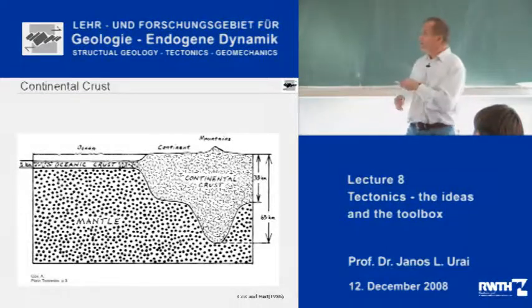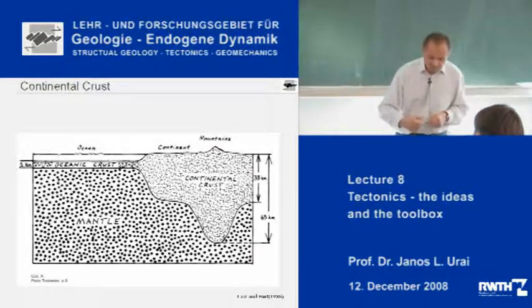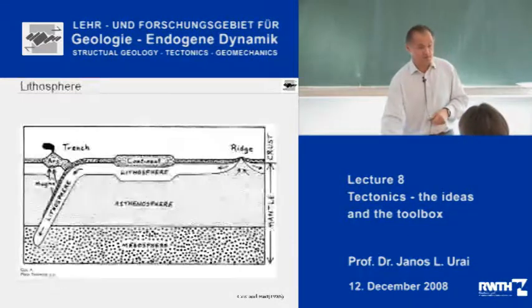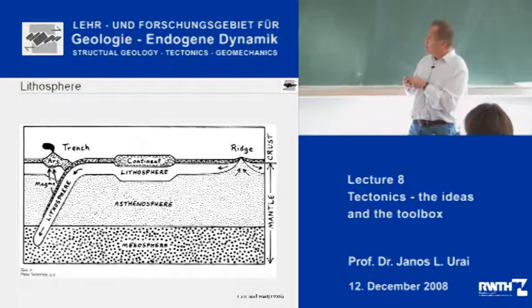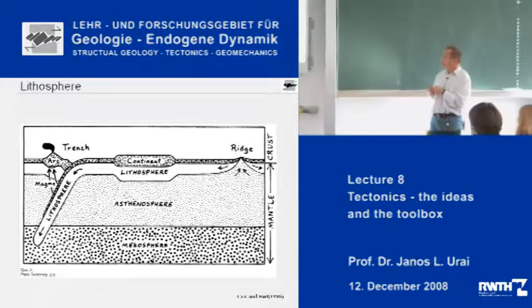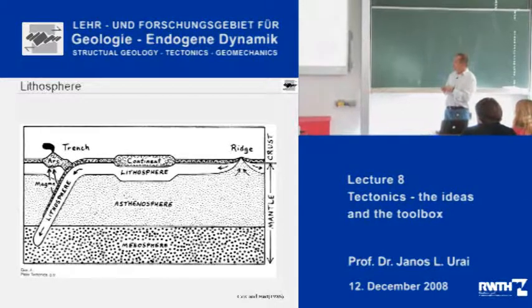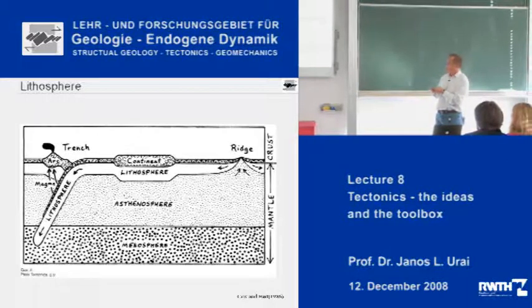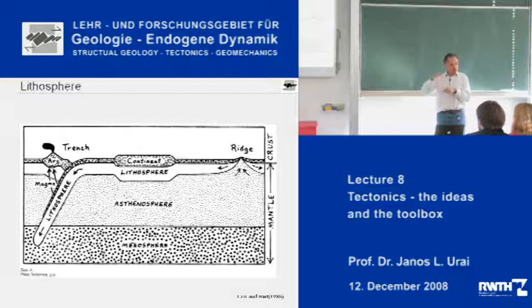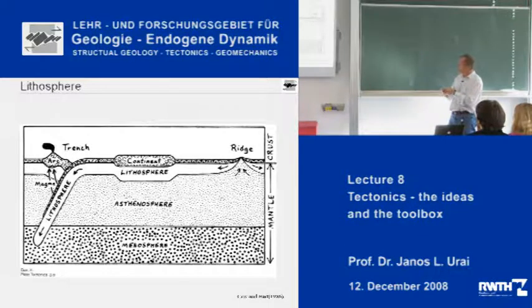Continental crust and oceanic crust are on top of the mantle. If we zoom out and look from a greater distance, there is the mantle, which has a very important discontinuity at this level, and the top part of the mantle is called the lithosphere. This white layer here is mantle, but it is much stronger than the mantle below it, and therefore works together with the continental and oceanic crust to form this strong plate.